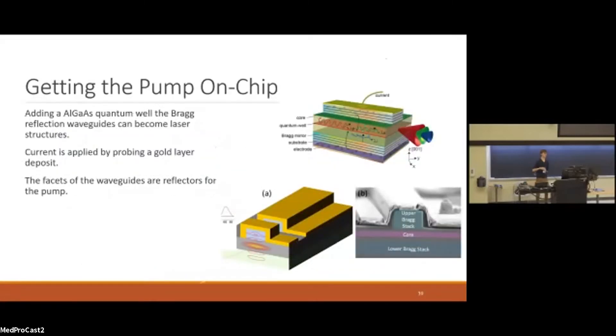So how do you get then the pump on chip? Well, aluminum gallium arsenide is a laser structure. So by adding a quantum well in the center, and then you can basically have a gold deposit on top, you can then probe that device. And basically, you can start lasering. The facets of your waveguide now become reflectors for your pump. And inside the same chip, you can have a laser and a source of SPDC. Now, by engineering the Bragg layer, you can now have a source of SPDC, that is polarization entangled. You can have your source of SPDC that is time frequency entangled. And we're aiming to make it time bin entangled as well.